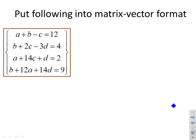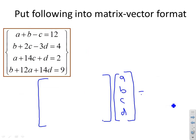Final example. This one's got four variables. My unknowns now are a, b, c and d, so I've put those in a vector of unknowns. My right-hand side: 12, 4, 2 and 9, so I've put that as a vector on the right-hand side.